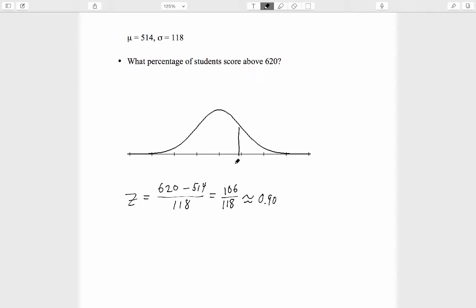We can mark that in our diagram here, z equals 0.90, and the region we're interested in is everything above z equals 0.90. That means when we look up 0.90 in the table, we're going to find out the probability of this region between 0 and 0.90.